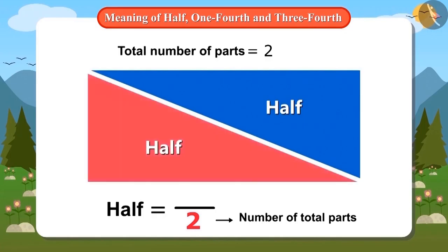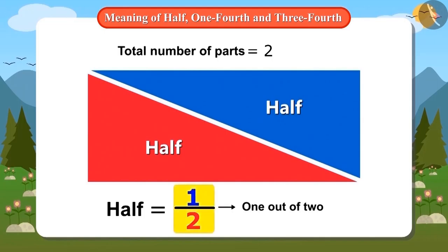Absolutely right. So we will put one above this line. It means one out of two parts. But how do we read it? It is read as one half — that is, one out of two parts.